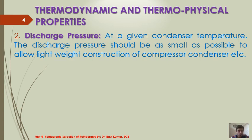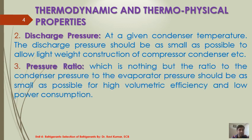Also, the pressure ratio will be small when the condenser pressure is small. So the third point is pressure ratio, which is interlinked with the discharge pressure. This is the ratio of condenser pressure to evaporator pressure, which should be as small as possible for high volumetric efficiency and low power consumption.